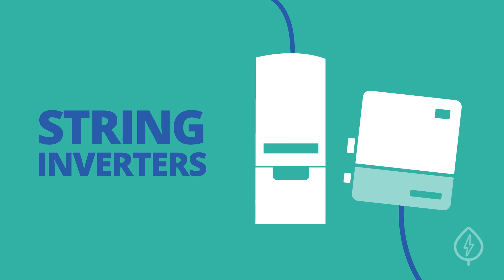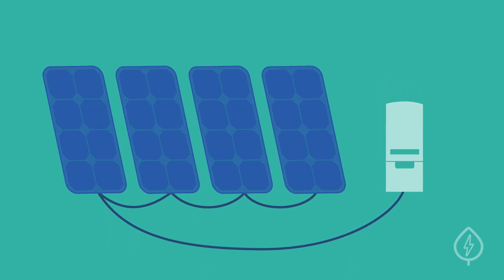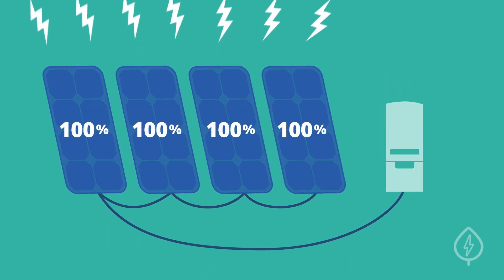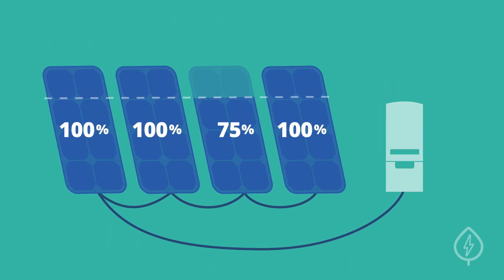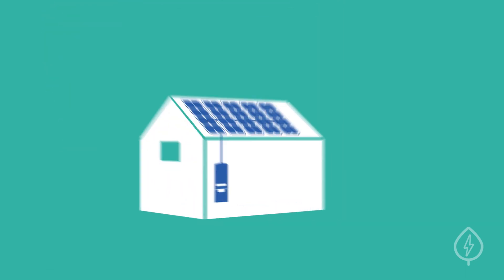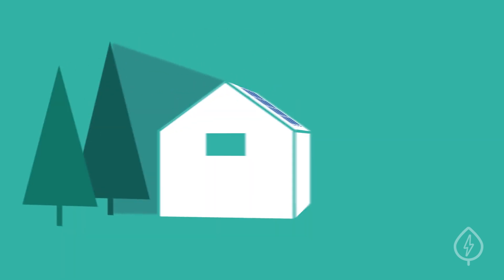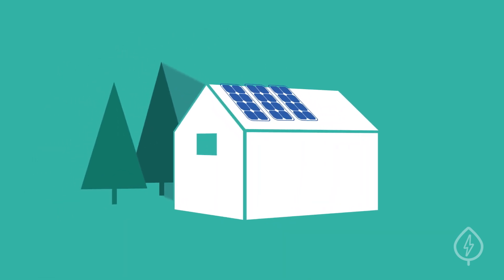String Inverters: With a string inverter, groups of solar panels are connected by strings to a central inverter. Because they are in a string, you can only produce as much electricity as the least productive panel in your system.